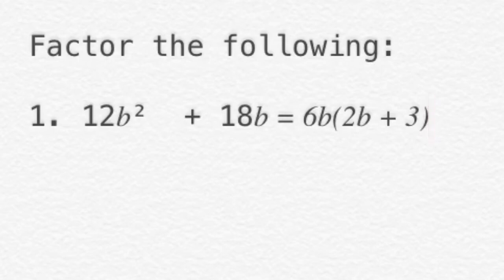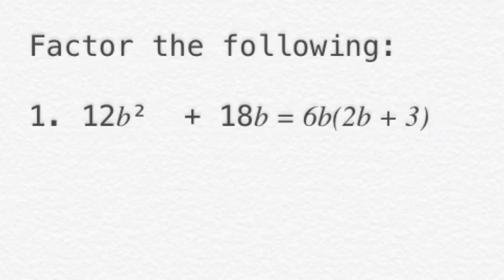You can check your answer by multiplying — the reverse process. 6b times 2b equals 12b squared, the first term. And 6b times positive 3 equals 18b. So 12b squared plus 18b confirms this is the correct factoring of the polynomial.